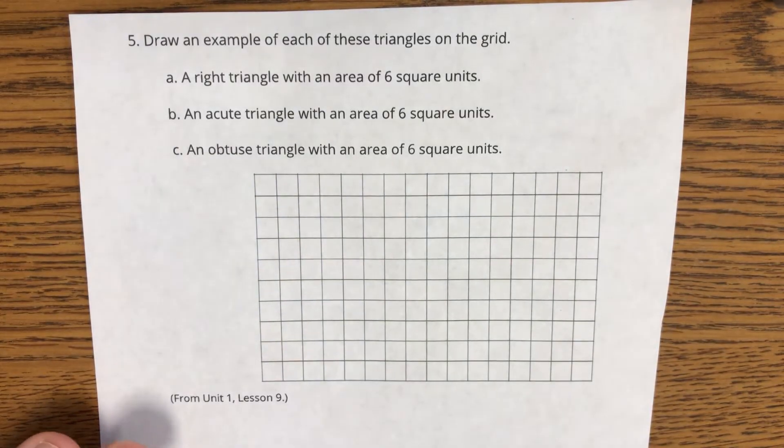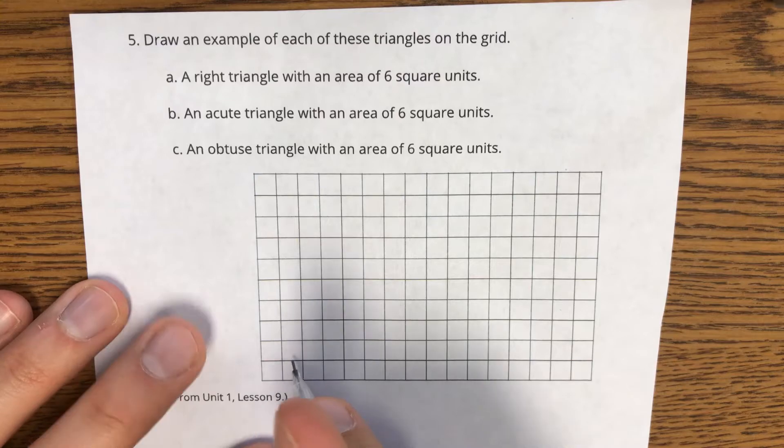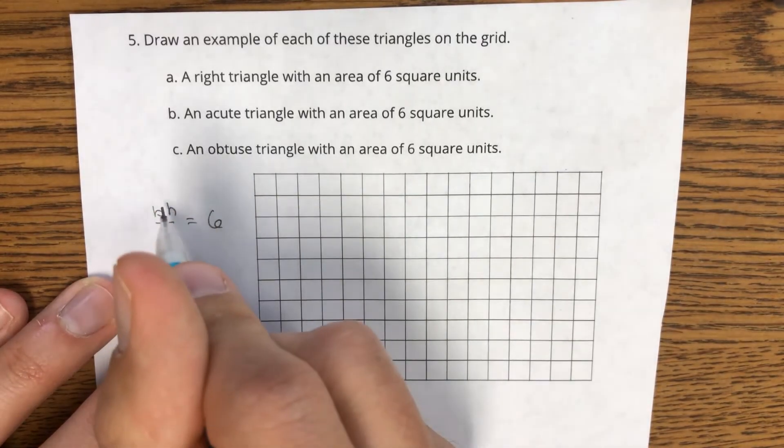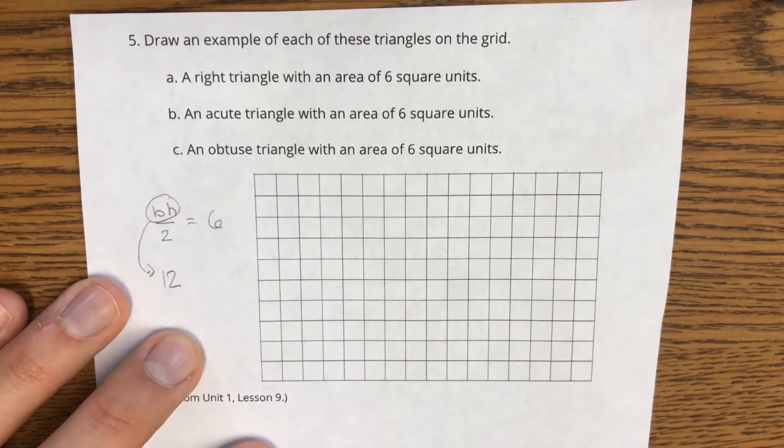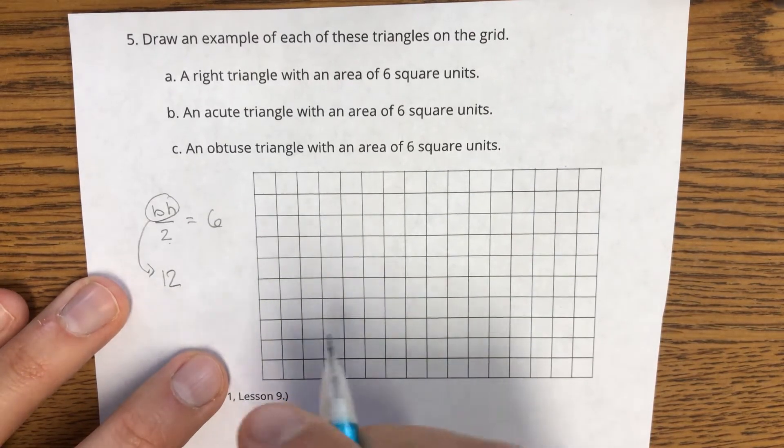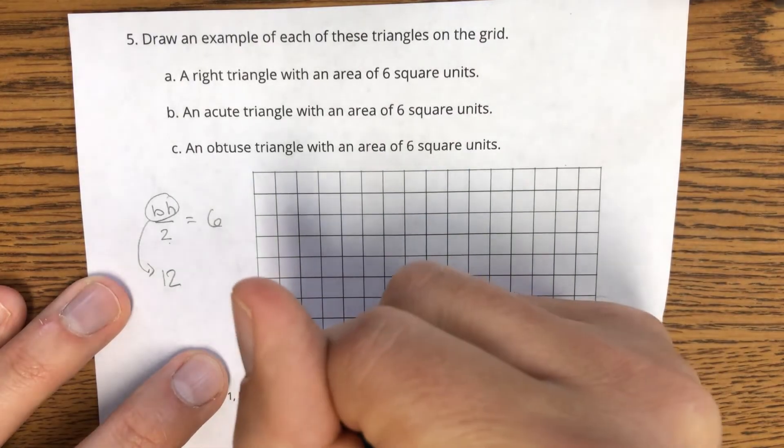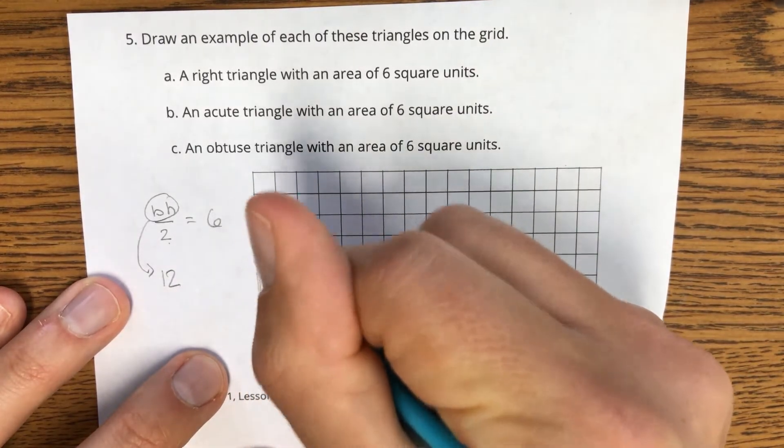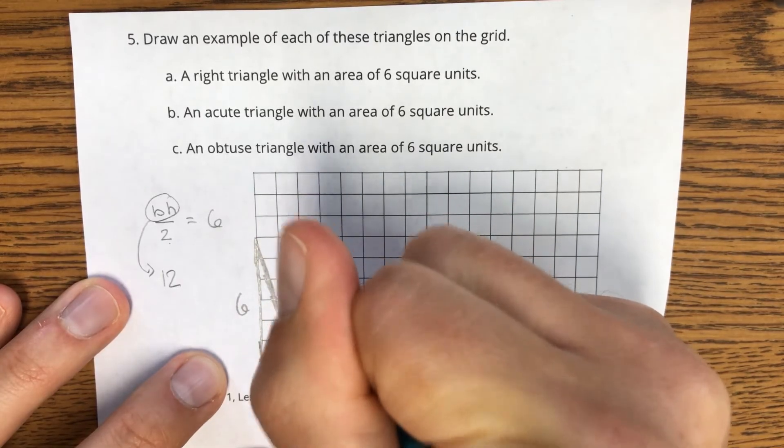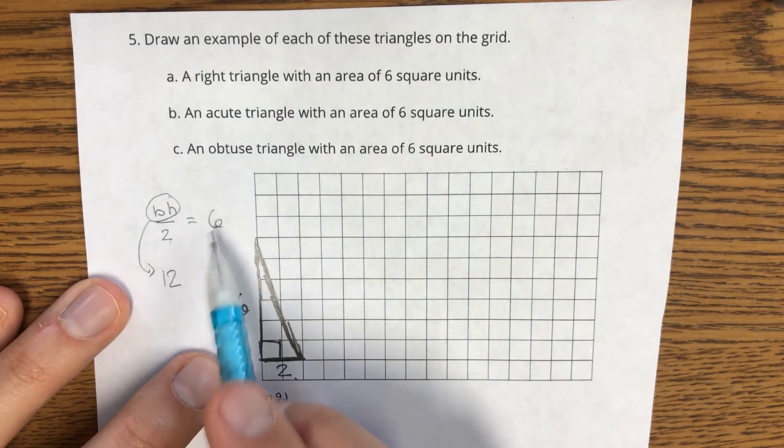In question five, we need to draw an example of each of these triangles on the grid. First one is a right triangle with an area of six square units. Well, remember base times height divided by two in this question is going to need to equal six. So whatever I do up top is going to need to be 12. So thinking three times four, six times two, things like that, because then I divide it by two and I need to get six. So if I just start off for a, how about with a base of two? I can then have a height of six. So when I bring this down, I have a right angle here. Six times two is 12 divided by two gets me that area of six.